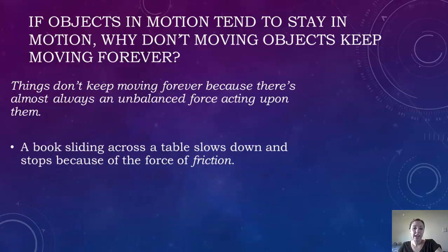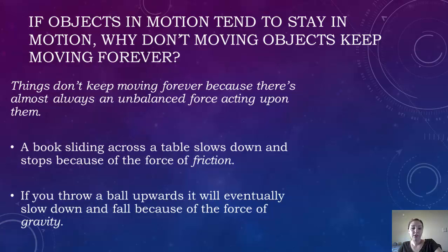So for an example, when you're sliding a book across a table, it's going to slow down and stop. That's caused by the force of friction. Or whenever you're throwing a ball upwards, it's going to eventually slow down and fall. And that's due to the force of gravity.